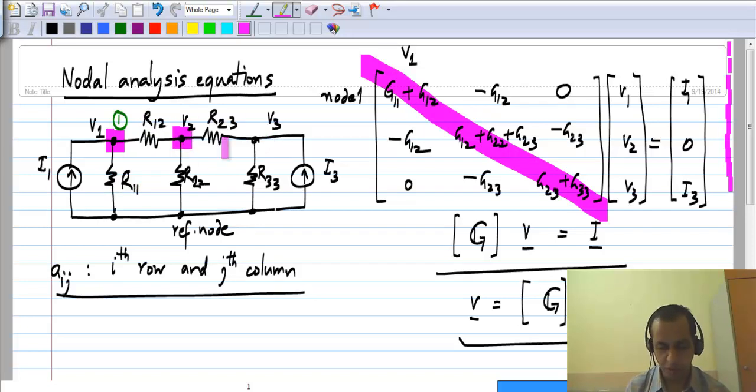And similarly, if you look at node 2, there are three resistors connected: G12, G23, and G22. So all of them are summed up and appear as diagonal element in the ith row. And finally, node 3 has G23 and G33 connected to it, and the sum of that appears over there.